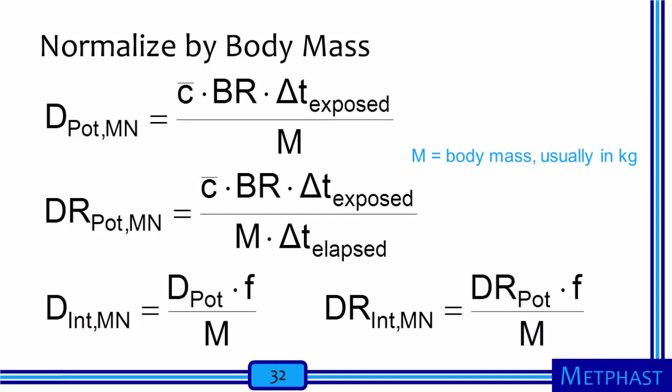Any of these doses or dose rates can be normalized by body mass. We take the potential dose or dose rate, or the internal dose and dose rate, and divide by the body mass to get mass normalized doses and dose rates.